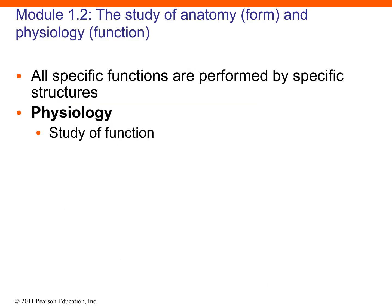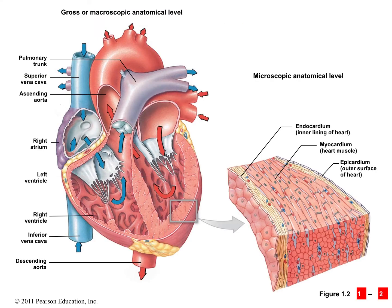The other side of the course is physiology — the study of function. How do we take the anatomy we've learned and put it together? How does anatomy work together to support a particular function? For example, we mentioned the four chambers of the heart. The physiology is understanding how those four chambers and the four valves of the heart work together.